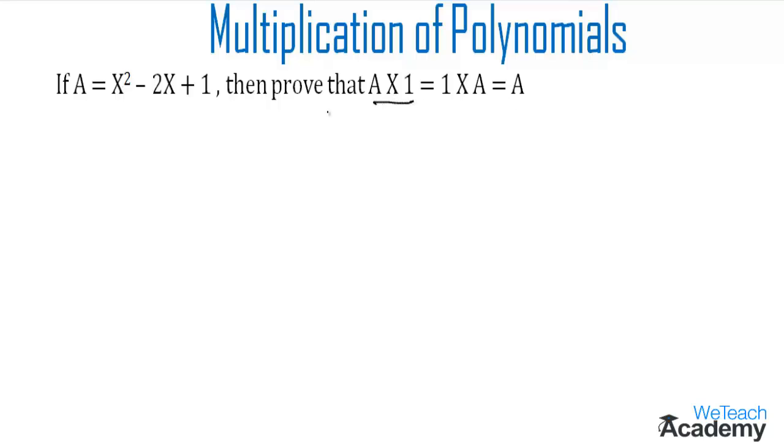First, let us consider A × 1. The given polynomial A is x² - 2x + 1 into 1. By multiplying this with 1, we get 1 into x² as x², 1 into -2x as -2x, and 1 into 1 is 1, giving us x² - 2x + 1.